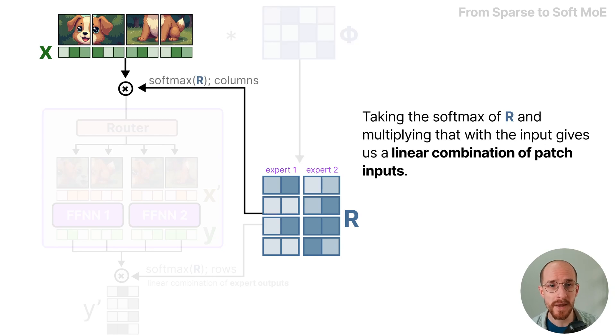Taking the softmax of R on the columns and multiplying that with the input gives us a linear combination of patch inputs.